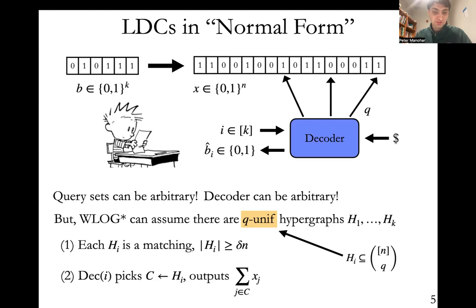This shows that the query sets have to have some structure. And we can also assume that the decoder has a lot of structure as well. The decoder will work by picking the c uniformly at random from h_i, and it will simply output the parity of the bits on this hyperedge. So that's how it decodes. The decoding function is no longer arbitrary, it's simply this XOR function. Up here, I've color coded the encoded bits, where each color corresponds to a different hyperedge in a specific hypergraph h_i. So you can see the decoder has queried all three green bits. It could have, for example, if the coins had been different, queried all three red bits, but it queried all three green bits. And now it'll read the three green bits and XOR them out and recover b-hat of i, that is zero. So that's the estimate.